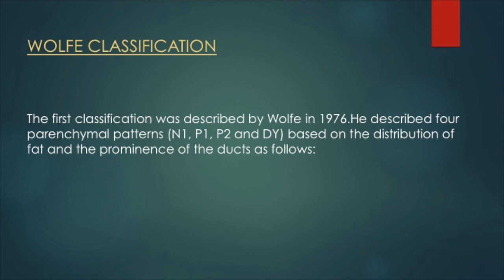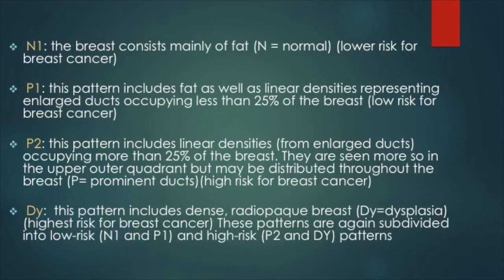Wolf divided the breast into four categories depending upon four parenchymal patterns: N1, P1, P2, and DY. N1 category had breasts consisting mainly of fat, which is normal breast tissue. P1 pattern included fat as well as linear densities representing enlarged ducts occupying less than 25 percent of the breast. P2 pattern included linear densities occupying more than 25 percent of the breast.